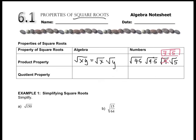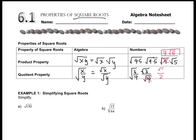While it might not look simpler, it is — it's a reduced form. The quotient property works the same way, only with division. If you have the square root of a fraction x over y, you can break that into the square root of x over the square root of y. For example, the square root of 3/4 becomes the square root of 3 over the square root of 4, which is the square root of 3 over 2.